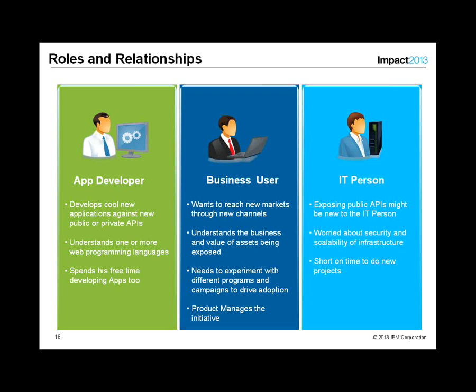The first role is the business user. This person sees this as an opportunity to reach new markets — understanding what value can be brought to the business by exposing back-end assets. They experiment with different programs and campaigns. A good example is a hackathon, where developers are invited to build applications using the company's APIs. This person also has the responsibility of running this as a business initiative within the organization.